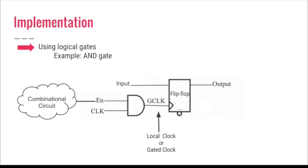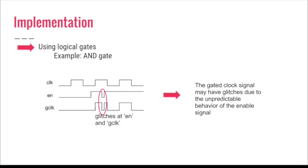What can go wrong? Remember that the enabled signal was coming from another combinational circuit, so it may have glitches. When the AND operation is performed, the glitches of the enabled signal can be propagated to the gated clock signal and this will lead to problems.